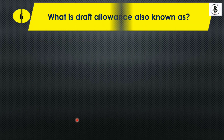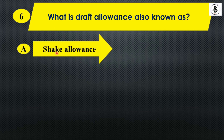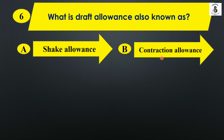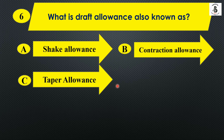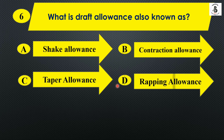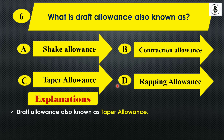Question six: What is draft allowance also known as? Option A: Sink allowance, Option B: Contraction allowance, Option C: Taper allowance, Option D: Rapping allowance. As already discussed, draft allowance is also known as taper allowance. So the answer is Option C.